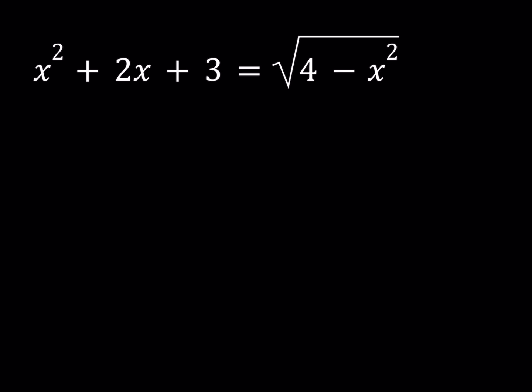In most radical equations we can square both sides and get rid of the radical. Let's go ahead and do that first. So if you square both sides here, you get the following: x to the 4th plus 4x squared plus 9 plus 4x cubed plus 6x squared plus 12x. And on the right hand side you get 4 minus x squared.